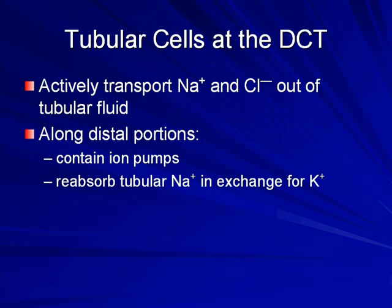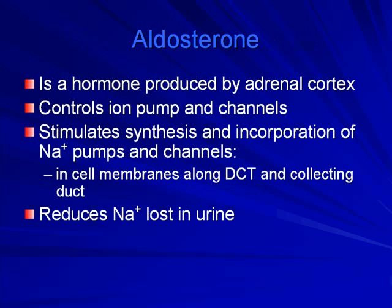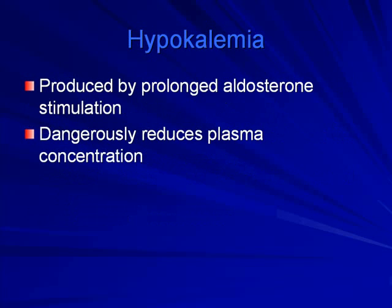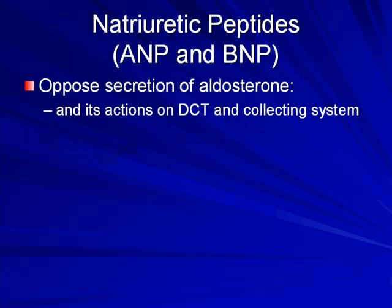Along the distal portion, ion pumps actively transport sodium and potassium out of tubular fluid, reabsorbing tubular sodium in exchange for potassium. Aldosterone — produced by the adrenal cortex — controls ion pumps and channels, stimulating synthesis and incorporation of sodium pumps and channels in cell membranes along the distal convoluted tubules and collecting ducts, reducing sodium loss in urine. Prolonged aldosterone stimulation can produce hypokalemia — dangerously low plasma potassium levels.